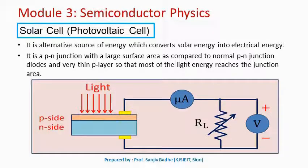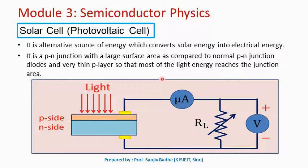Another important device we are going to get introduced to is a solar cell. This solar cell is an alternative source of energy that converts solar energy into electrical energy. When we make light incident on the solar cell, we will get current and voltage developed across the solar cell.